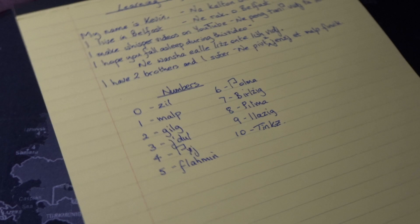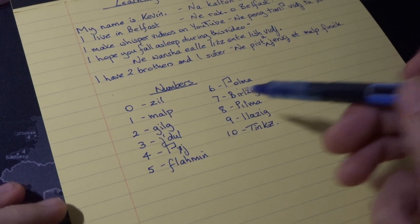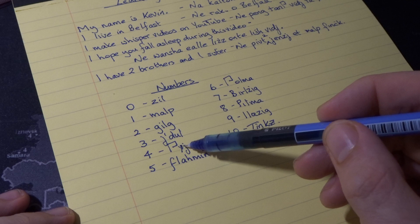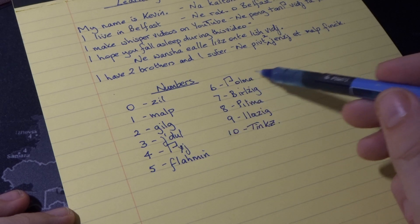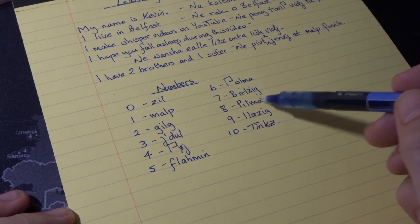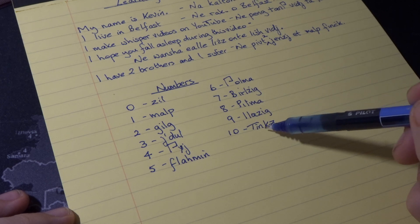So the numbers are: zil, mat, gilj, jatul, tuija, flamen, thulma, berlsig, palma, ilesig, and tinksa.